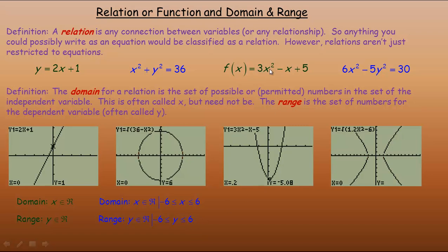The next one, f of x equals 3x squared minus x plus 5, is a parabola. I've placed a point very close to the vertex. The domain for this is any real number — the graph goes forever to the right and to the left, increasing in both directions. From the equation's point of view, you can put any number in place of x; there's no restriction on squaring it, multiplying by 3, subtracting x, and adding 5. So the domain is the entire set of real numbers.